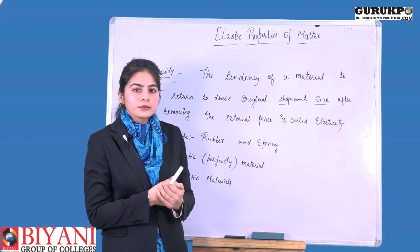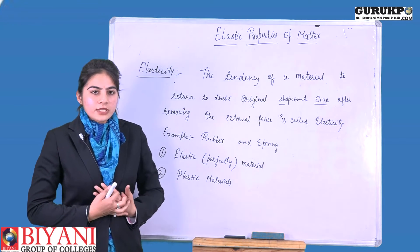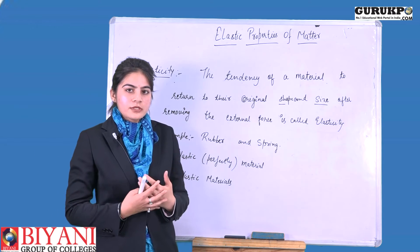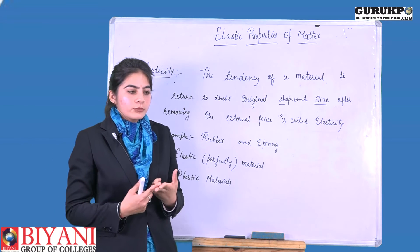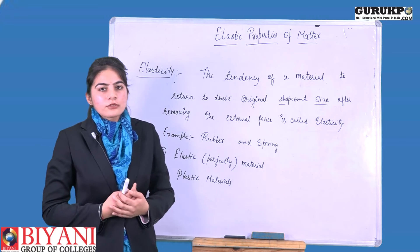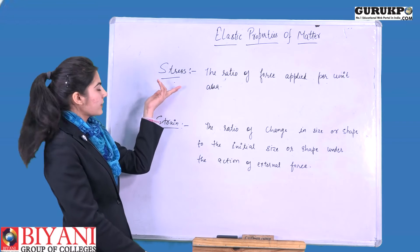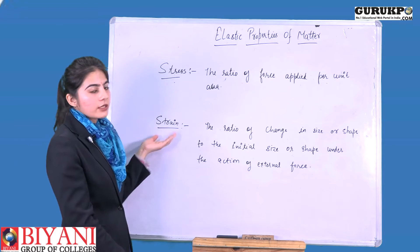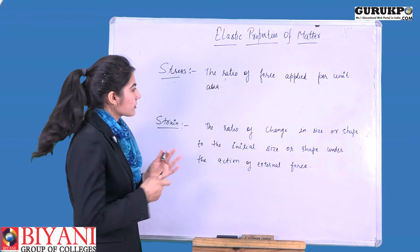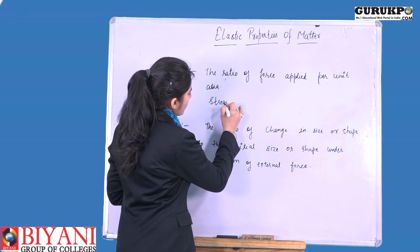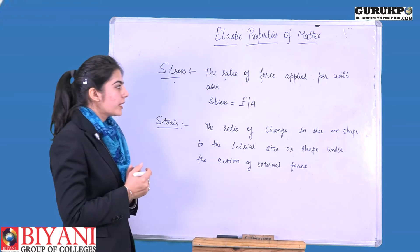In elasticity, we have stress and strain. Stress is the applied force per unit area. Strain occurs when we apply force on any material and they change their shape according to their length, volume, or tangential direction. The ratio of force applied per unit area is called stress. Mathematically, stress is force per unit area, where force is the external force applied to that material.